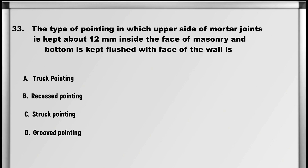Next up is question number 33: The type of pointing in which the upper side of mortar joints is kept about 12 mm inside the face of masonry and the bottom is kept flushed with the face of the wall is: A. Truck pointing, B. Resist pointing, C. Struck pointing, D. Grooved pointing. Answer: C. Struck pointing.